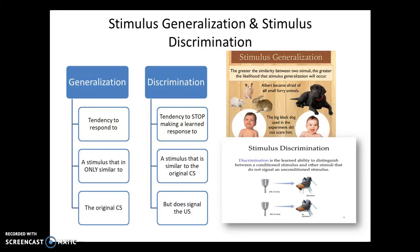In Pavlov's research, he started finding certain phenomena related to classical conditioning. We talked about acquisition. There's higher order conditioning, and there's also stimulus generalization and stimulus discrimination — sometimes just called generalization or discrimination as in Myers, but other books call them stimulus generalization and stimulus discrimination.